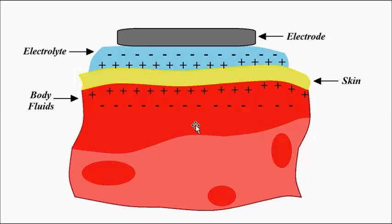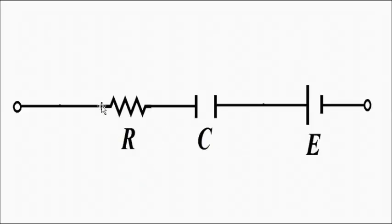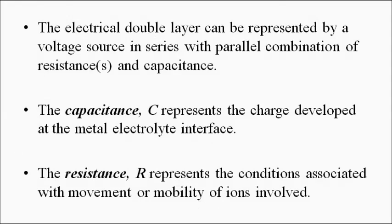The resistance represents the conditions associated with the migration of ions — the mobility of both positive and negative ions in the electrolyte and body fluids. It governs how easily the signal can migrate and penetrate through the electrolyte-skin interface and reach the electrode. C is the capacitance associated with the charge layer, R is the resistance associated with ion mobility, and E is the contact potential. To simplify, we can represent it as a resistor in series with a capacitor and then the contact potential.